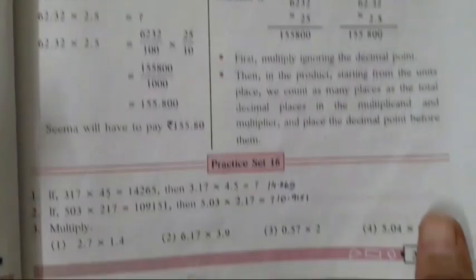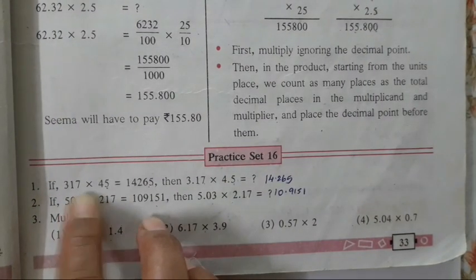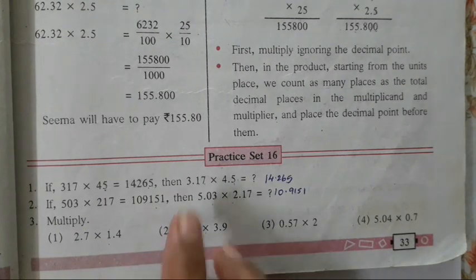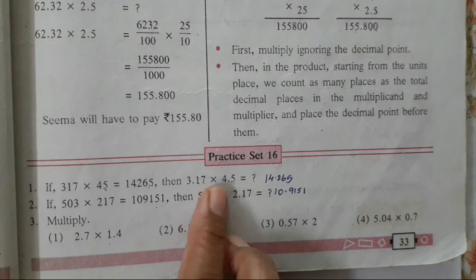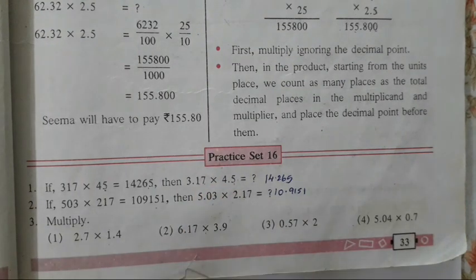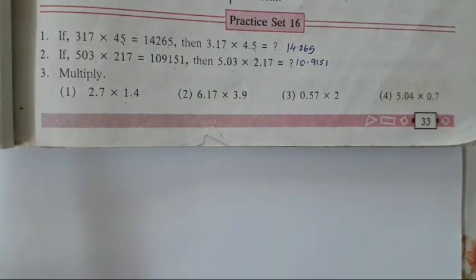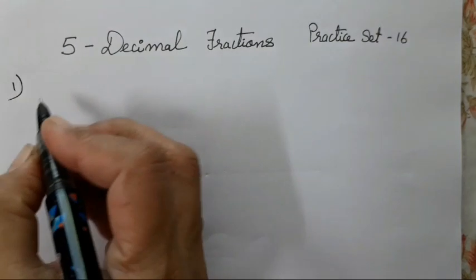So in this question, a multiplication sum has been given along with the answer — they have only added the decimal point. I am going to teach you how to do this sum orally without multiplication. I will write it down so that it will be more clear.